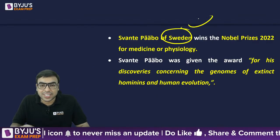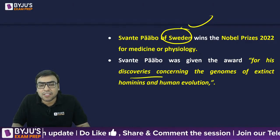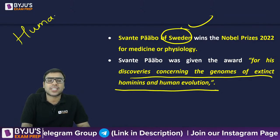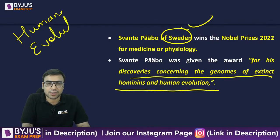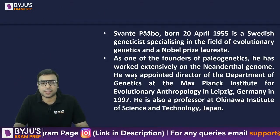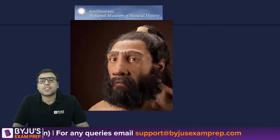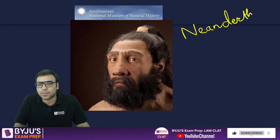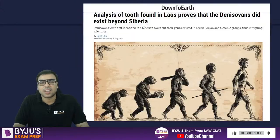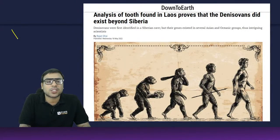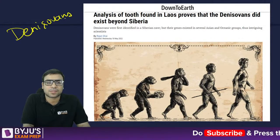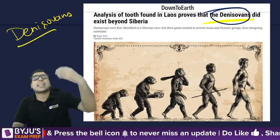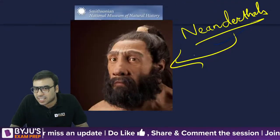Svante Pääbo is from Sweden. He received the award for his discoveries concerning the genomes of extinct hominins and human evolution. He researched Neanderthals and Denisovans — our ancestors — and matched their DNA with modern humans.